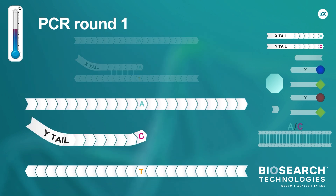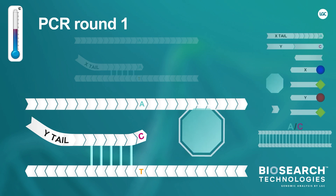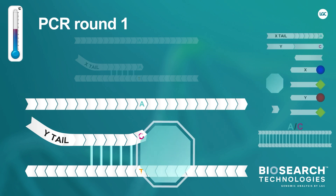On rare occasions, the allele-specific primer which is not 100% complementary to the template DNA may anneal. If this happens, a specially modified CAASP TAC present in the CAASP master mix prevents extension.